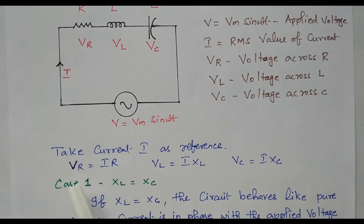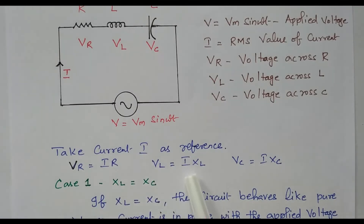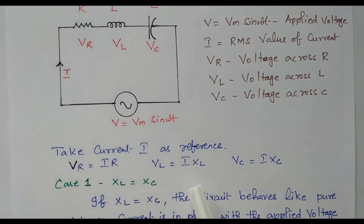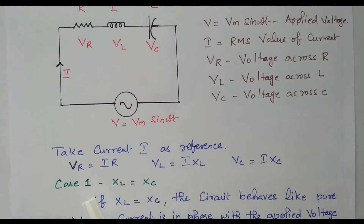We can take current as a reference vector. Based on that, the voltage drop across the resistor Vr equals I into R. Voltage drop across the inductor is I into Xl. Voltage drop across the capacitor is I into Xc. In this circuit, we have both inductor and capacitor. The inductor means the current is lagging; if capacitor is present, the current is leading.